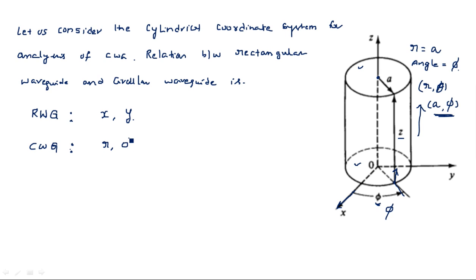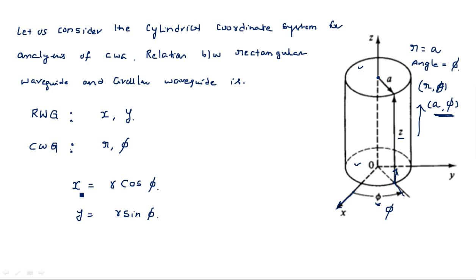The circular waveguide has parameter radius and φ. The relation between x, y and r, φ is: x is equal to r cos φ, and y is equal to r sin φ. Here x refers to the rectangular coordinate system, and r and φ refer to the cylindrical coordinate system. Similarly y refers to the rectangular coordinate system and r, φ refer to the cylindrical coordinate system. We are relating these two systems.